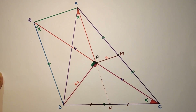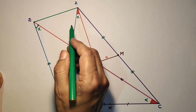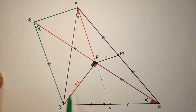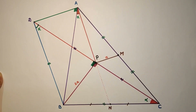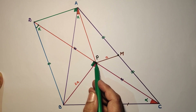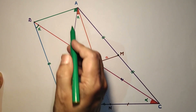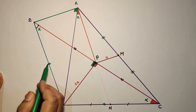Since BPAD is a cyclic quadrilateral and BD subtends 90 degrees at point P, BD will also subtend 90 degrees at point A — meaning angle BAD is 90 degrees. Since the angles at P and A are both 90 degrees, the midpoint of BD is the center of the circle and BD is the diameter. This angle is 90 plus alpha.